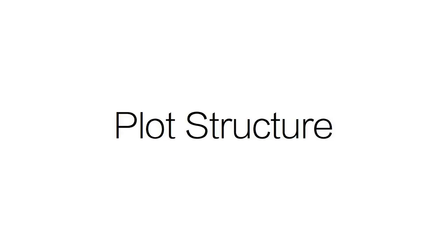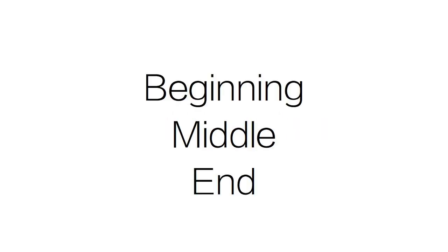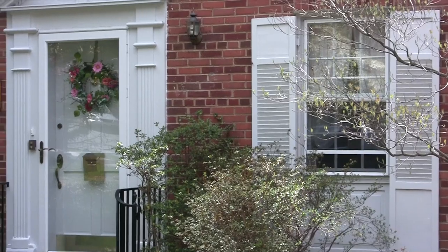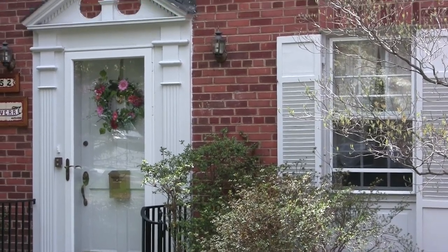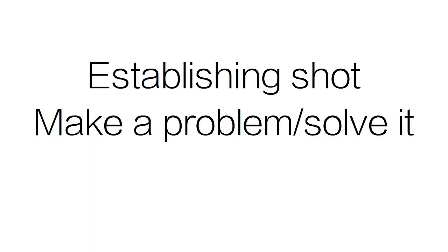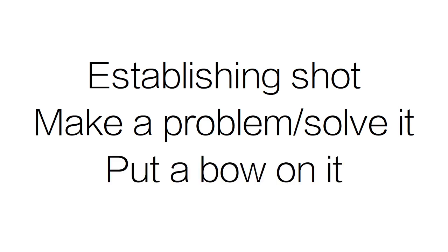As you are screenwriting, especially for a narrative film, you should think about plot structure. The most important thing about plot structure is your film must have a beginning, a middle, and an end. In practical terms, the first shot of most movies is an establishing shot — a shot that tells the audience where you are. In the middle of the film, be sure that you have a problem and then solve the problem. And finally, put a bow on your movie by saying something clever or summarizing.